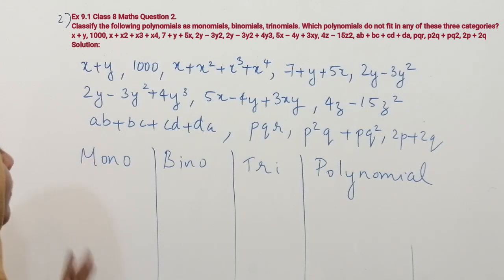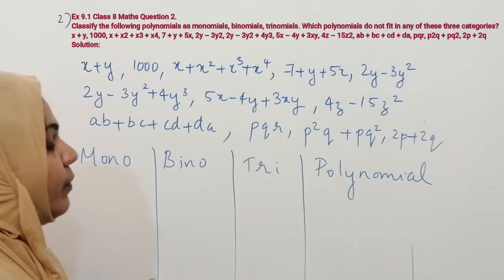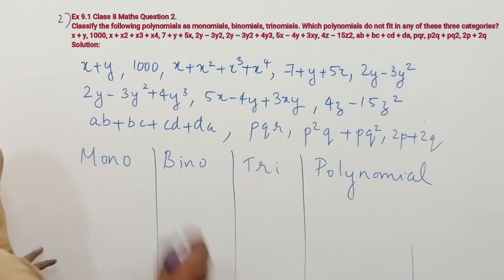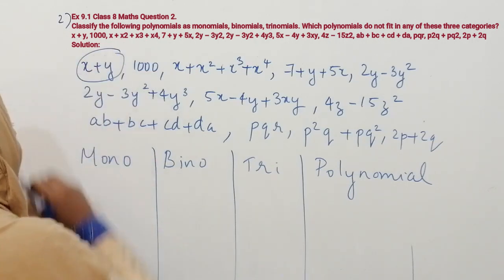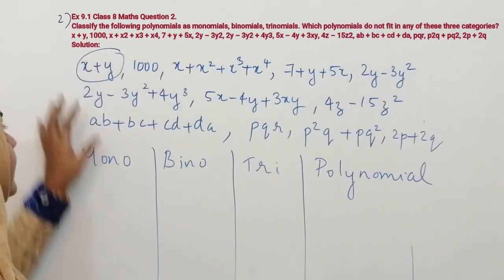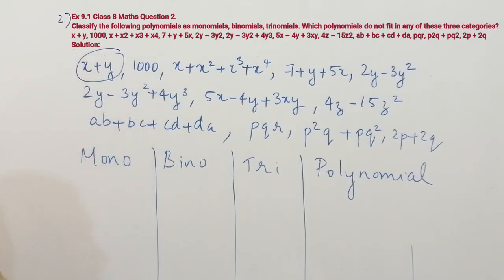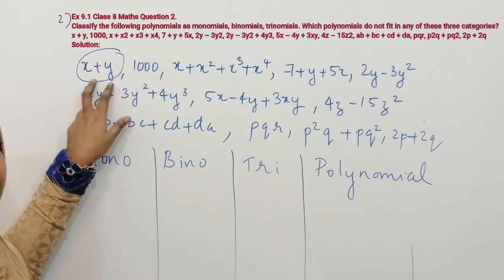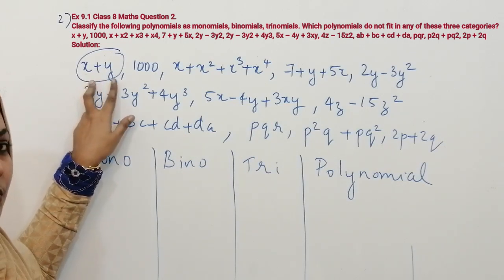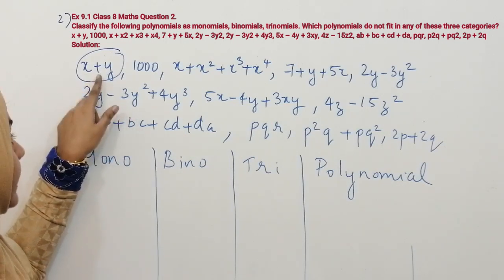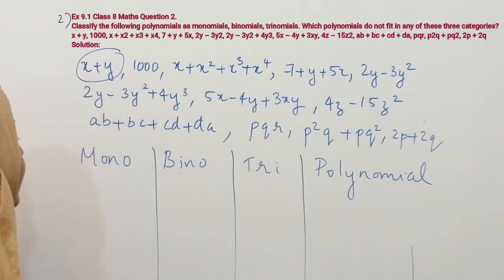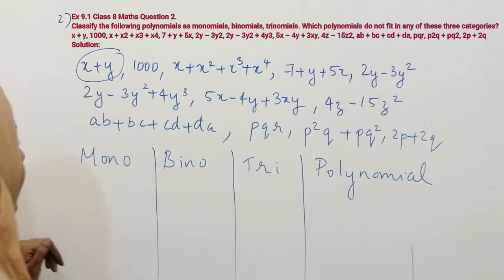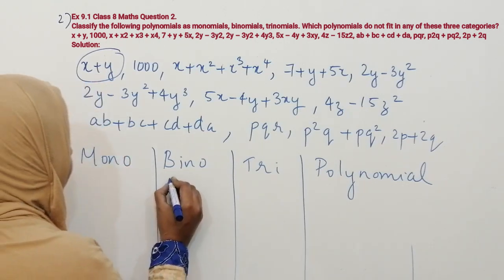Let's categorize: monomial, binomial, trinomial, and polynomial. The first expression is x plus y. In this expression you can see there are two terms — it is an algebraic expression comprising two terms separated by a plus sign. So we write x plus y under the category of binomial.